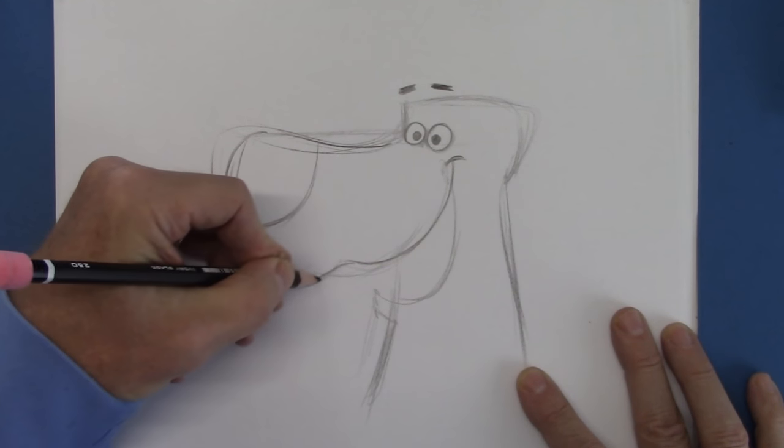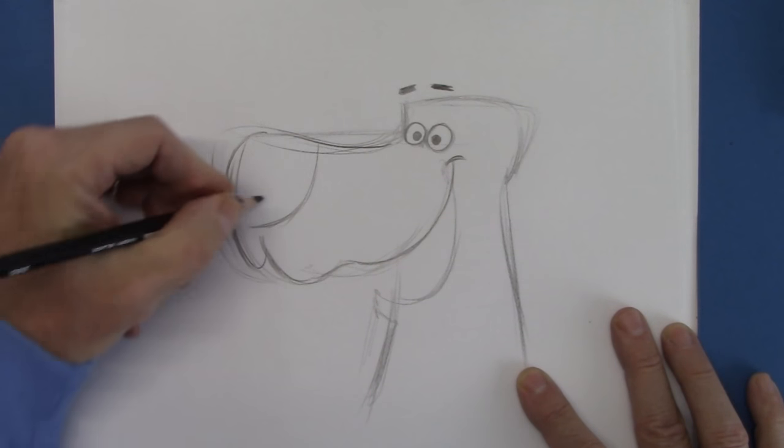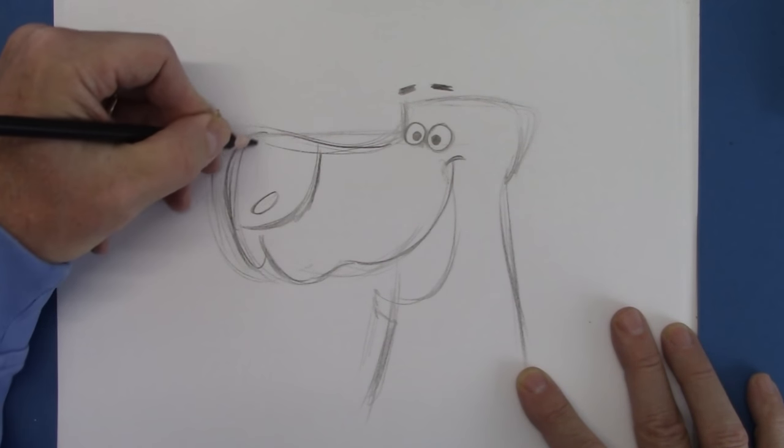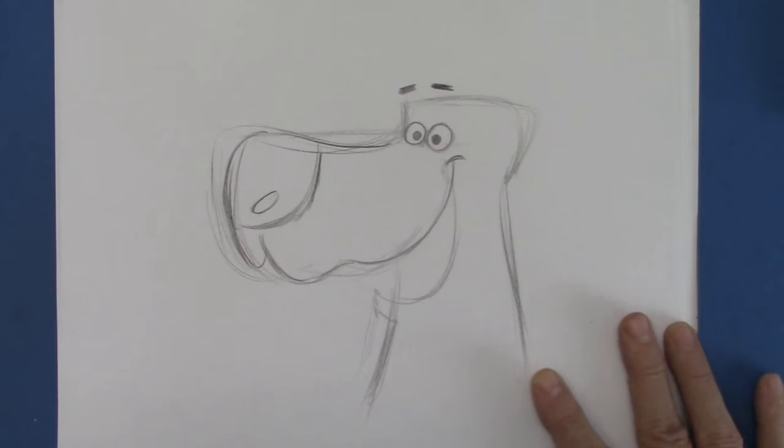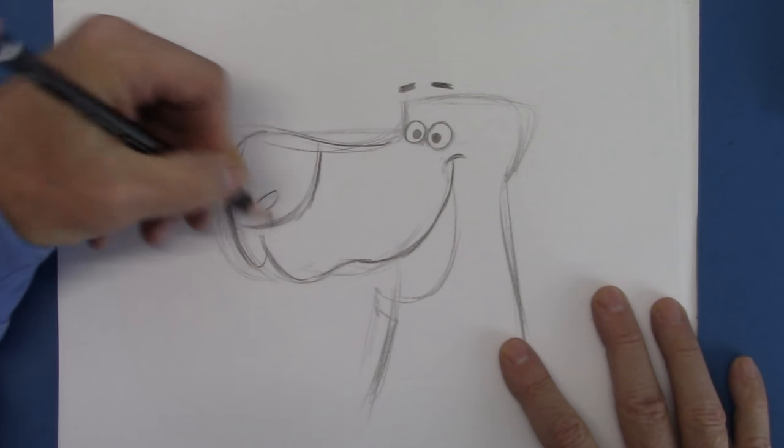Now again, in the profile you wouldn't see that. You wouldn't see the split lip, but we are being goofy here. Let's put a nostril in. And again, we're caricaturing this. The nostril's not really going to look like that on a dog.